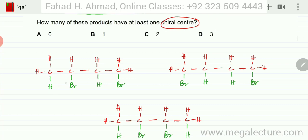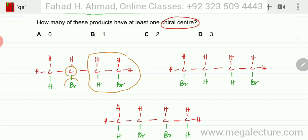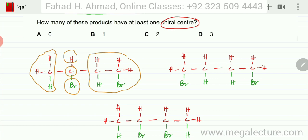Looking at the first molecule, this carbon over here is going to be chiral. Carefully examining all four substituents on this carbon: there's a Br on one side, an H on another, a CH3 group on one side, and a different chain on the other. So this carbon atom is going to be your chiral center — it's tetrahedral and two different enantiomers would be formed around it.